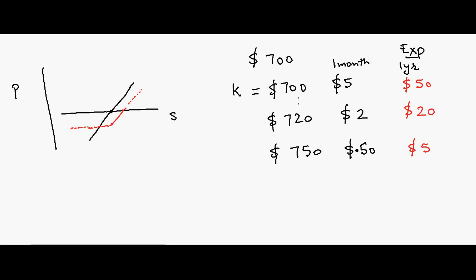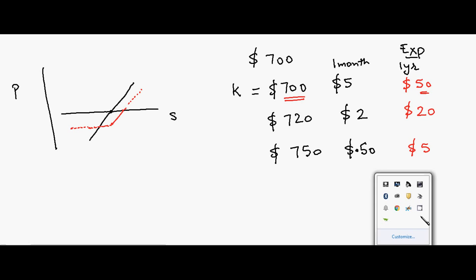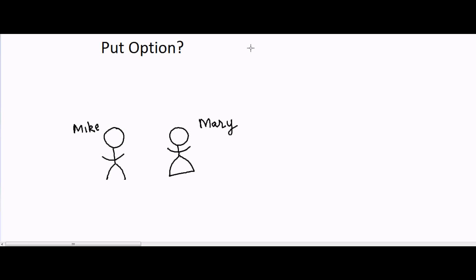Prices change based on both the expiry date and the strike price. If you hold a stock at $700, you can think of selling a call option for one year at a $50 premium, making a total of $750. The only drawback is that you're still exposed to the downside — if the stock goes down, you'll lose money.